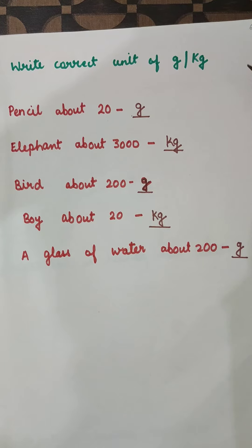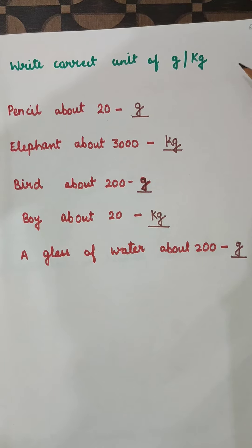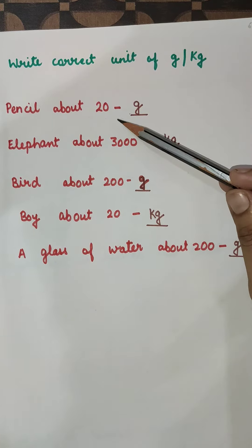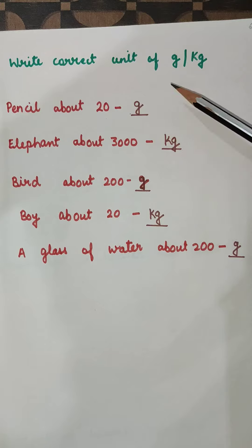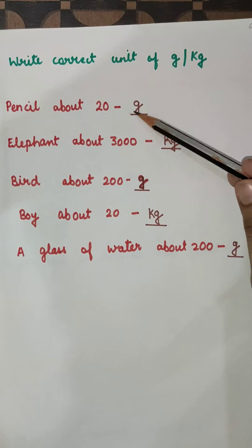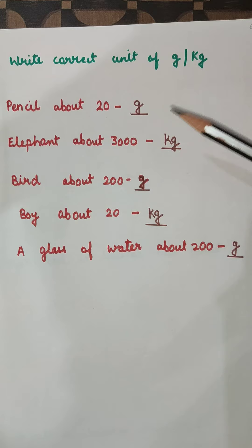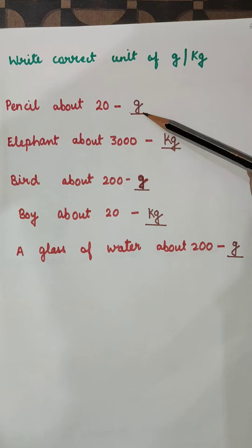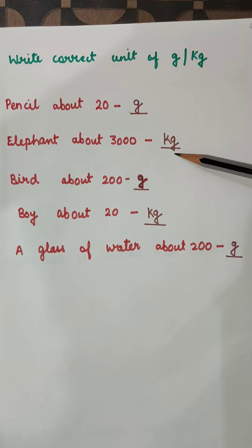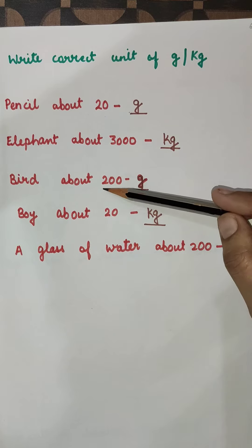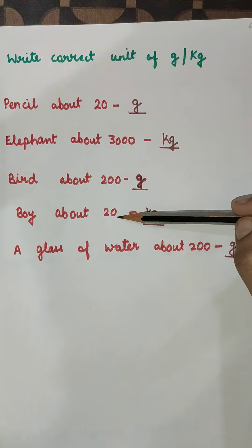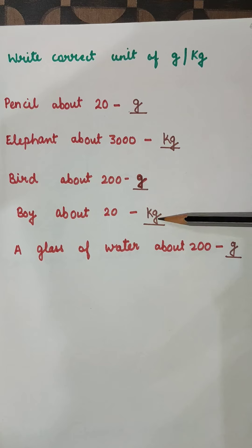Now here you have to write down some units of gram and kilogram. A pencil is about 20 — gram or kilogram? A pencil is about 20 grams. An elephant is about 3000 kg. A bird is about 200 grams. A boy is about 20 kg.